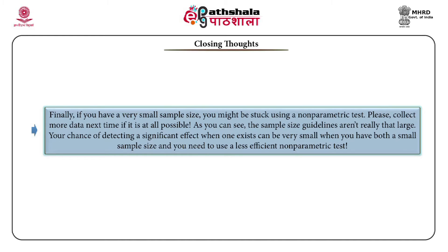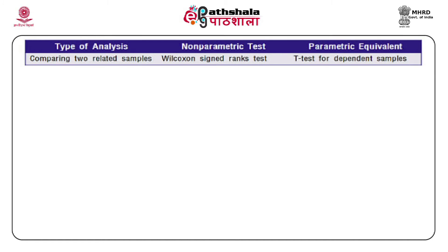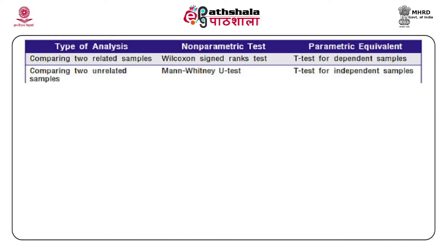Your chance of detecting a significant effect when one exists can be very small when you have both a small sample size and need to use a less efficient non-parametric test. When comparing two related samples, the relevant non-parametric test is the Wilcoxon signed rank test, and the parametric equivalent is the t-test for dependent samples. When comparing two unrelated samples, the non-parametric test is the Mann-Whitney U test, and the parametric equivalent is the t-test for independent samples.